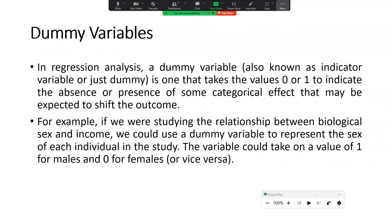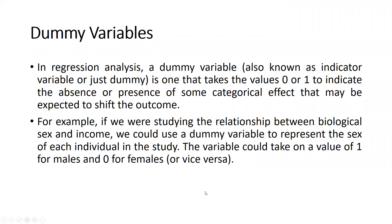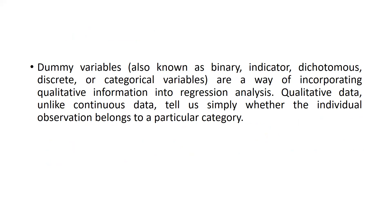For example, if we were studying the relationship between biological sex and income, we could use a dummy variable to represent the sex of each individual in the study. The variable could take on a value of 1 for male or 0 for female, or vice versa. So that is our categorical variable — gender, with two categories.